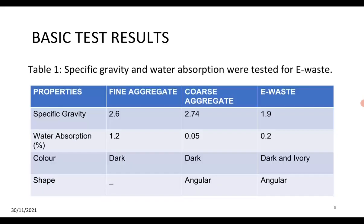This table shows basic test results with properties including specific gravity, water absorption percentage, color, and shape for fine aggregate, coarse aggregate, and e-waste. Specific gravity: fine aggregate 2.6, coarse aggregate 2.74, e-waste 1.9. Water absorption: fine aggregate 1.2%, coarse aggregate 0.05%, e-waste 0.2%. The shape of both coarse aggregate and e-waste is angular.